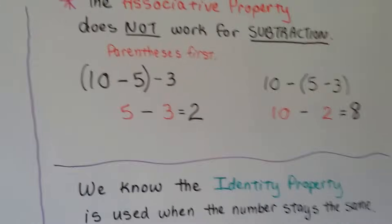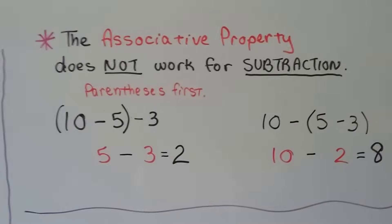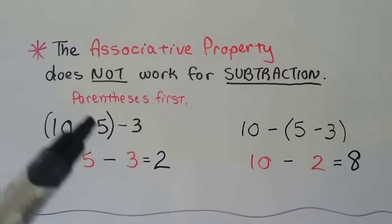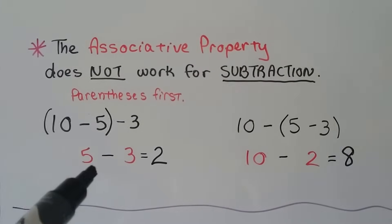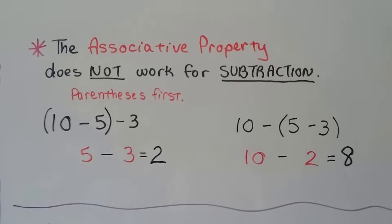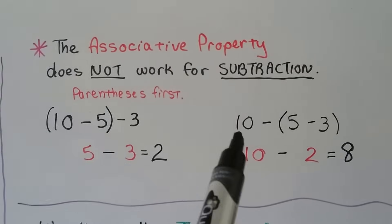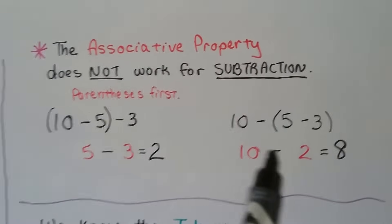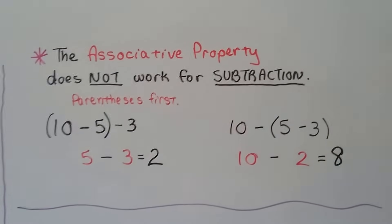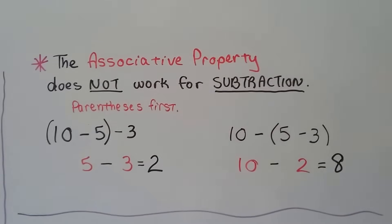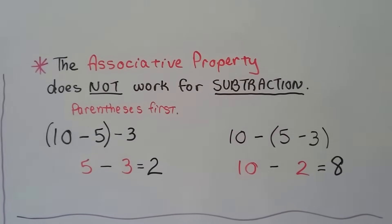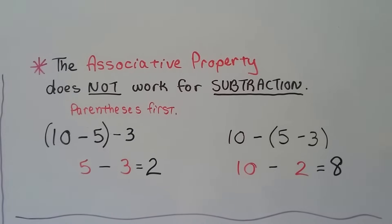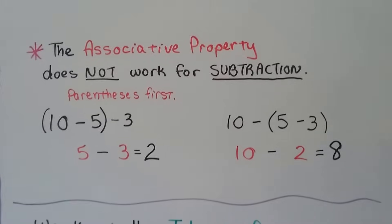Here's why the associative property does not work for subtraction. If we're given (10 minus 5) and then subtract 3, we get 5 minus 3, which is 2. But if we're given 10 minus (5 minus 3), that's 10 minus 2, which is 8. The grouping changes the answer, so the associative property does not work for subtraction — we're not subtracting in the same order, and we end up with a different difference.